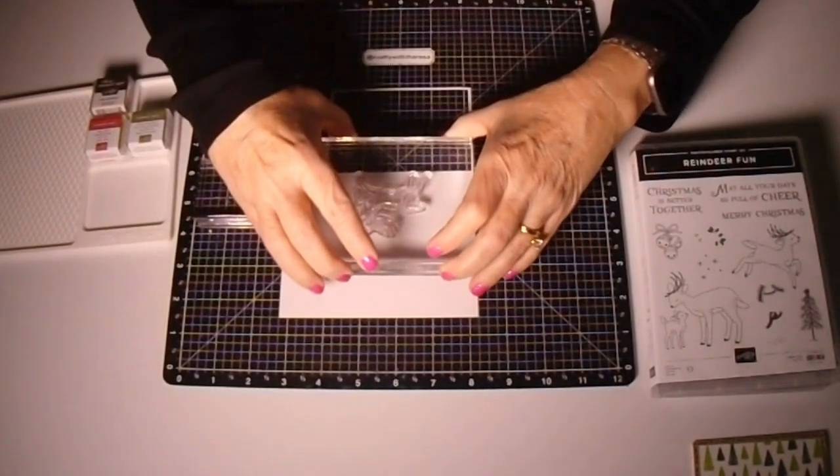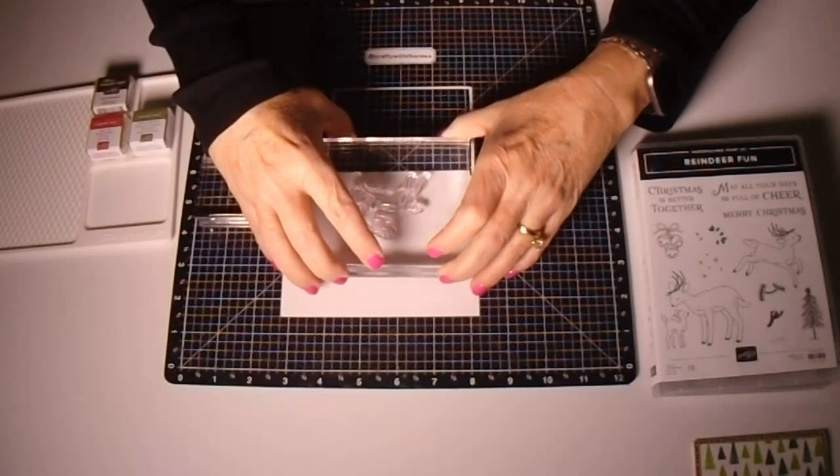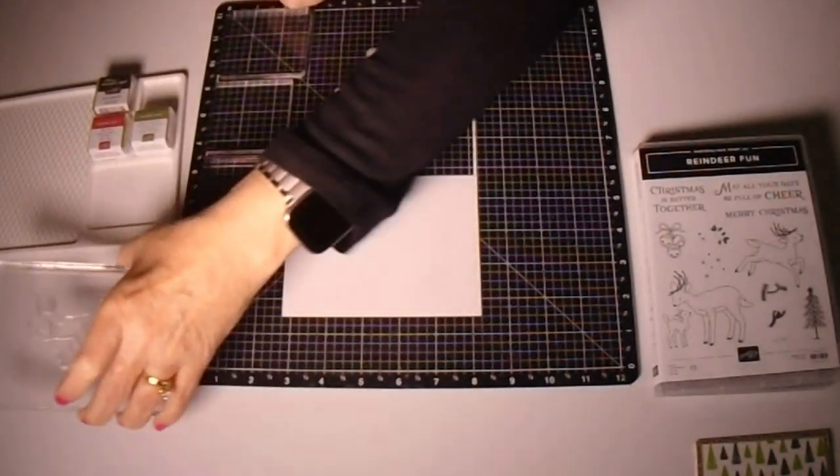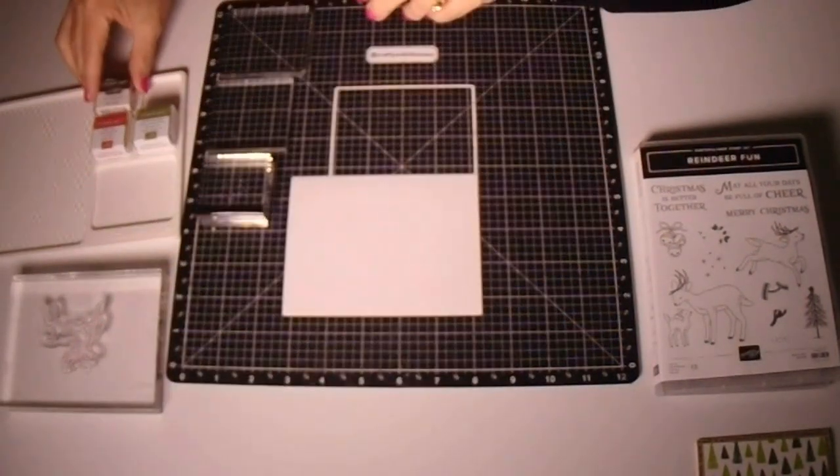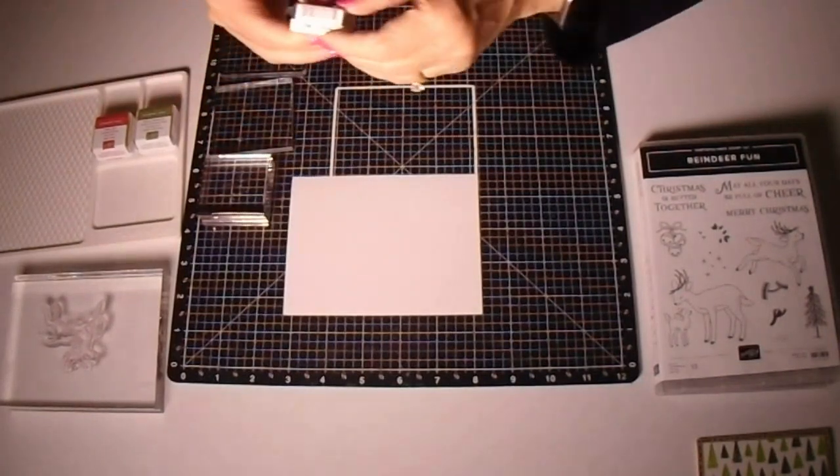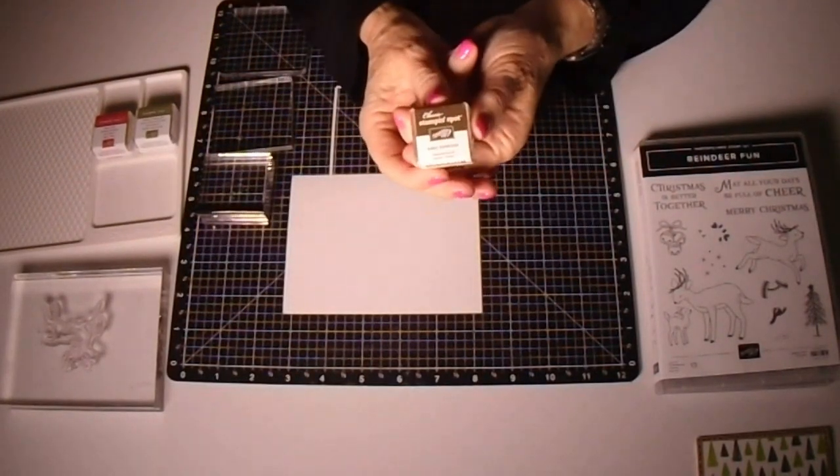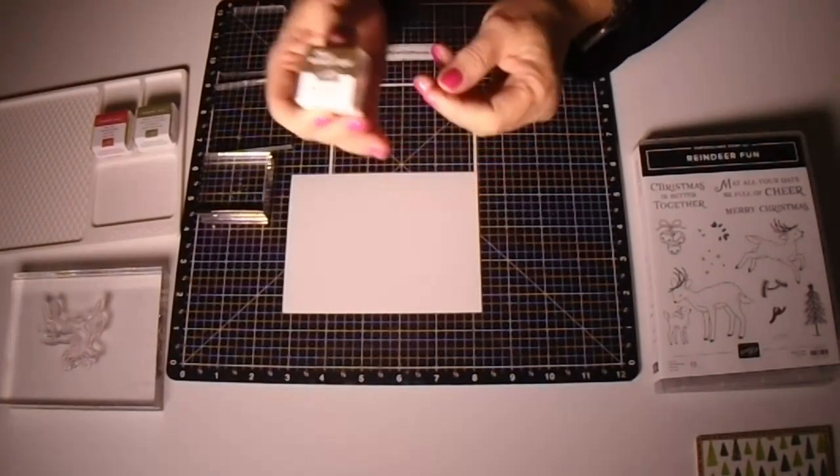We'll start with a piece of four by five and a quarter inch cardstock. In this case it's called White Willow and we'll use that as our base. We'll use three stamp and spots to make this card.